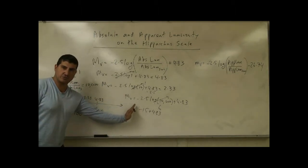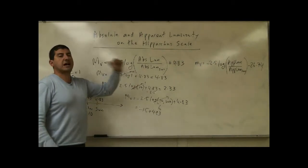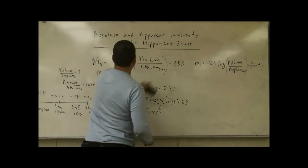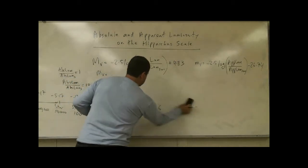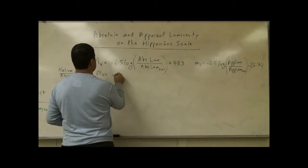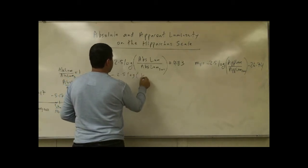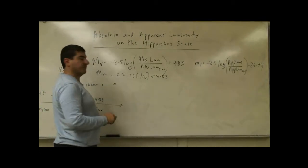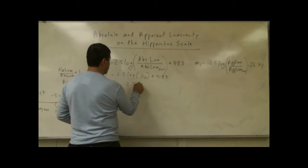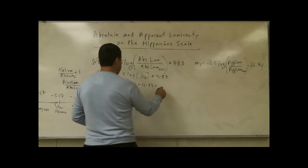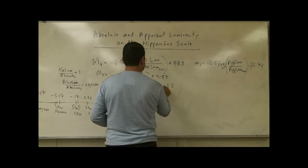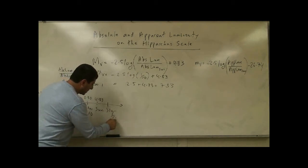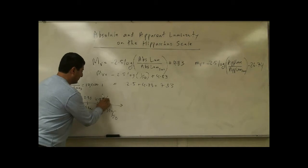We can also go in the other direction. For a star 10 times dimmer than the sun, MV equals negative 2.5 times log of one-tenth plus 4.83. Log of one-tenth is negative 1, and the two negatives make positive 2.5, so MV equals 2.5 plus 4.83, which equals 7.33. Going 2.5 units to the right gives a star one-tenth as bright as the sun.